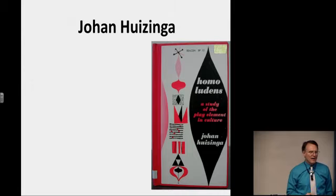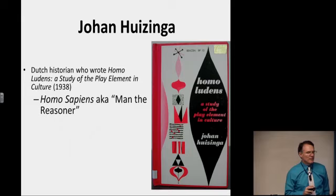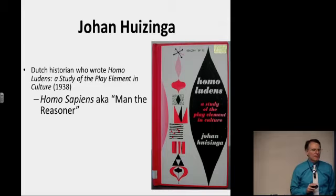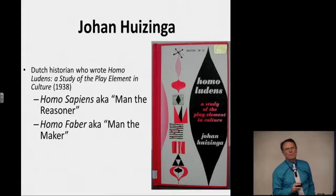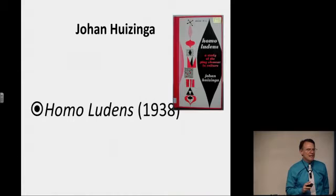Johan Huizinga, a Dutch historian, wrote the book Homo Ludens: The Study of the Play Elements in Culture in 1938. At the time, Homo sapiens was a popular term — man the reasoner — and someone had come up with Homo faber, man the maker. So he came up with Homo Ludens, man the player, attempting to popularize this as part of human nature.